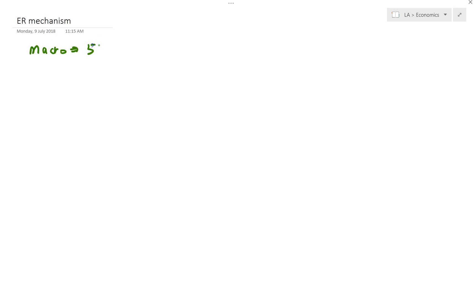Today I'm going to talk about the second important mechanism for JC macroeconomics. The big difference between macro and micro is that for macro it is 50% content and 50% application. The challenge that a lot of students have for macroeconomics is that they're not able to understand the content, and since the content is always linked, they're not able to see the linkages and get confused.